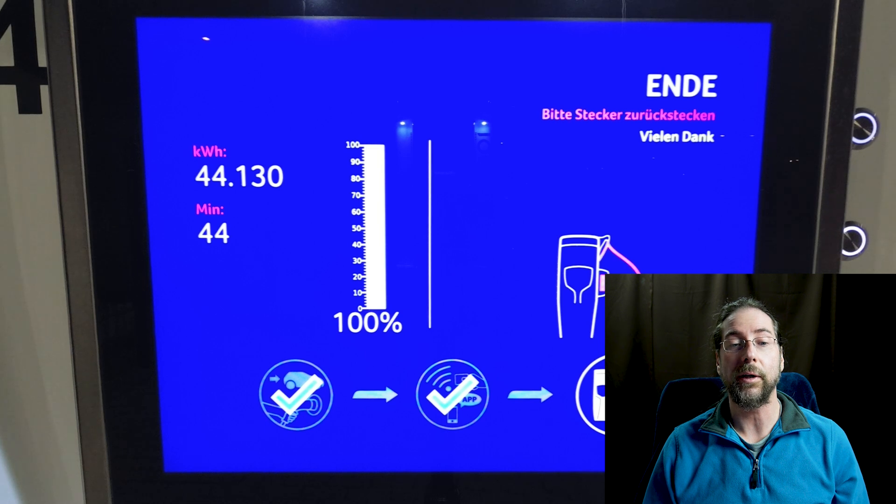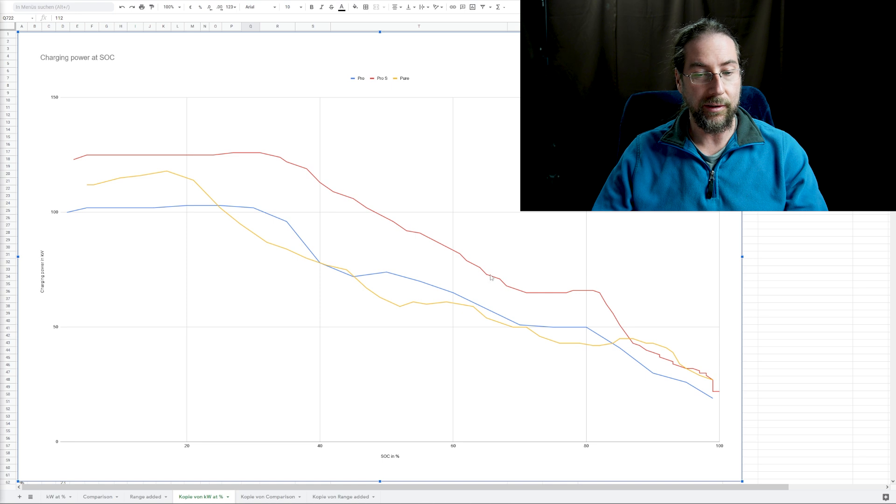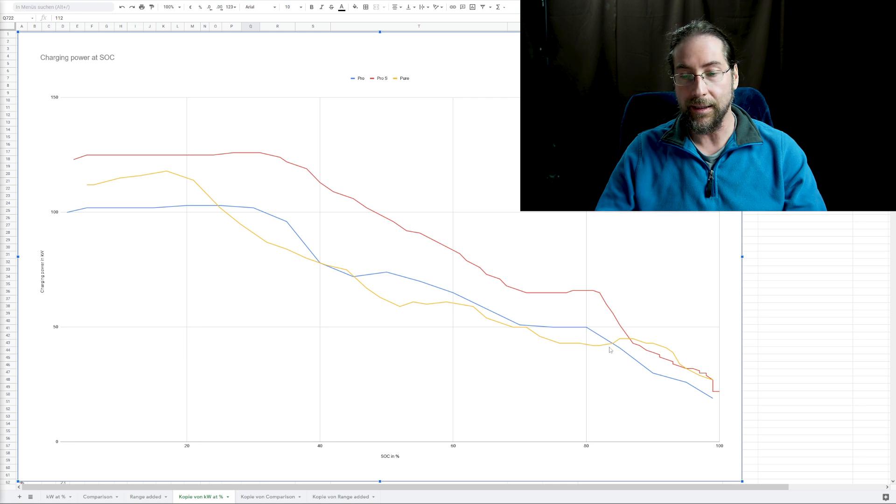So here we now have the graphs. This is state of charge in percent and charging power in kilowatt. Blue is my Pro 58 kilowatt hour battery, yellow is the Pure, and red is the 77 kilowatt hours from the Pro S. As you can see, because my car doesn't have the update yet that the Pure has, the Pure has higher charging up to 25 percent. Then it's under almost all the time except here where my ID.3 dumps down and goes up again at 43 to 45.